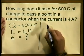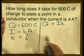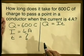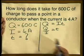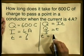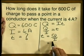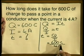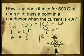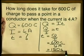Let me show you how to do that. Starting from q is equal to i times t, rearranging to make t the subject: q divided by i equals t, so t is equal to q divided by i. Substituting our values: 600 coulombs divided by 4 amperes. 600 divided by 4 gives us an answer of 150 seconds.